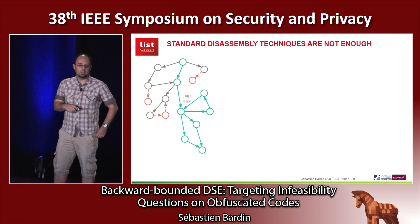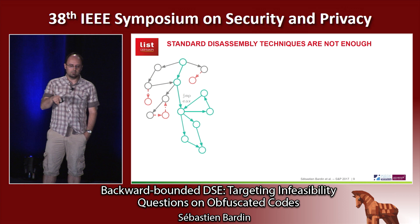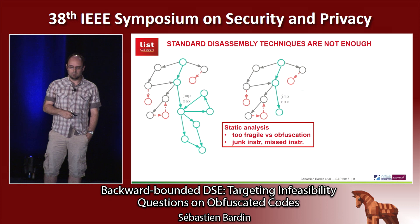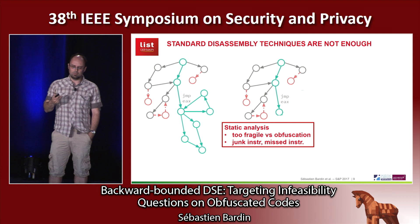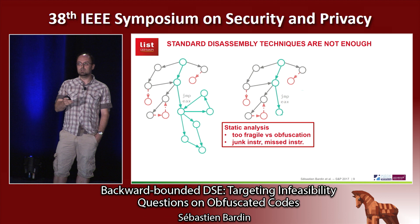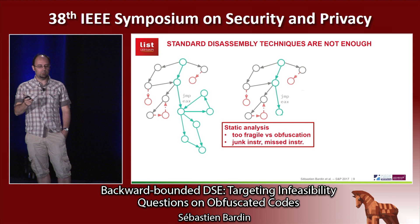Standard disassembly techniques are not enough. On this small graph, suppose you have one dynamic jump and the red circle represents some spurious code. If you use basic static analysis and disassembly, once you reach the dynamic jump, you cannot go further because you cannot find the dynamic target if it is a little bit obfuscated. You can also be lured into going into the spurious code. Basically, static analysis is far too fragile versus obfuscation, especially once you have self-modification, encryption, and so on — it's just too hard.